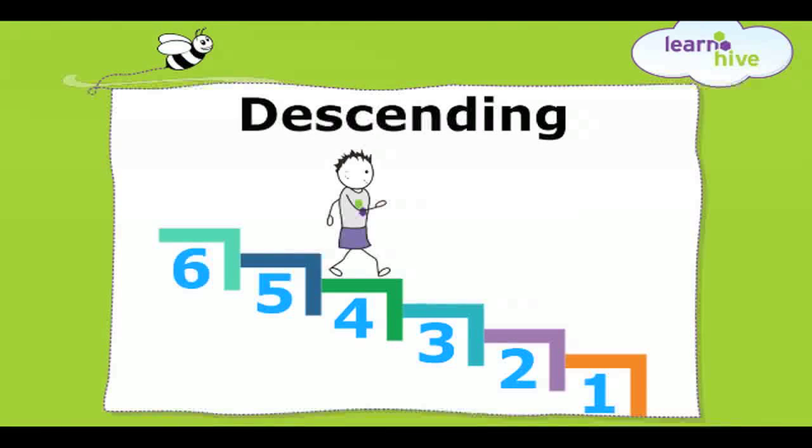So are the numbers six, five, four, which are in descending order. Now Dom continues to come down to step one.